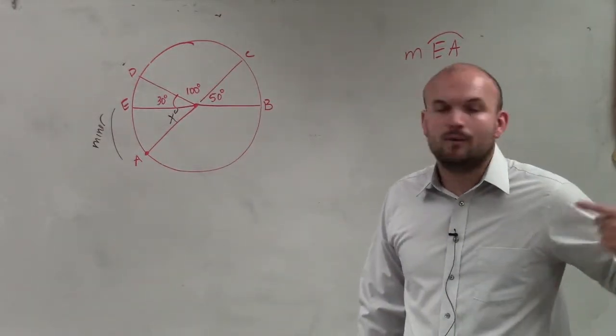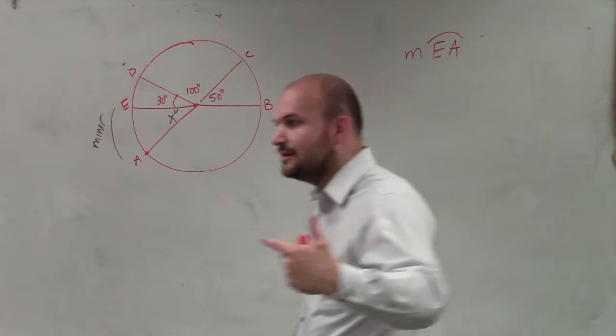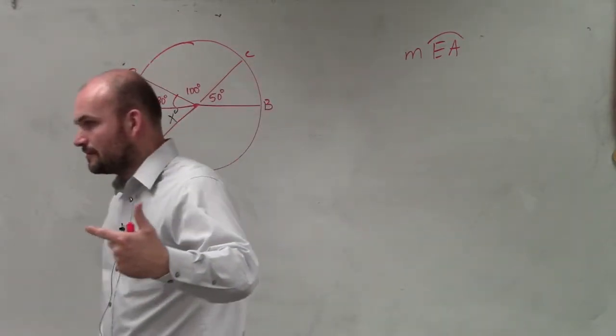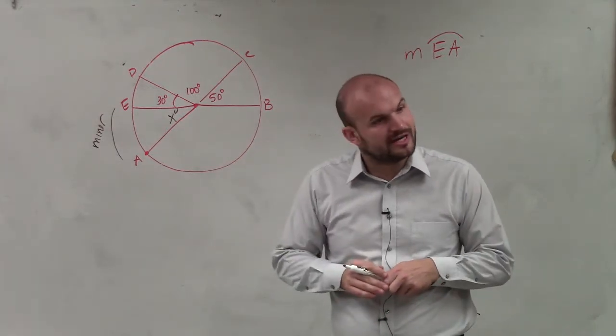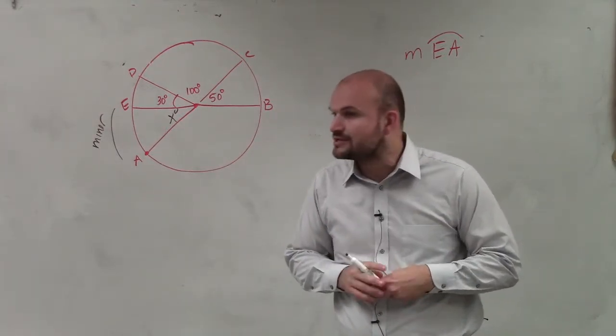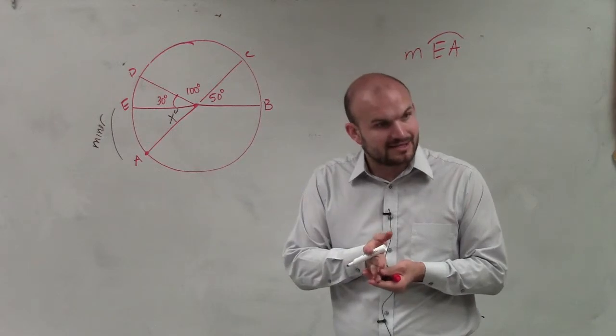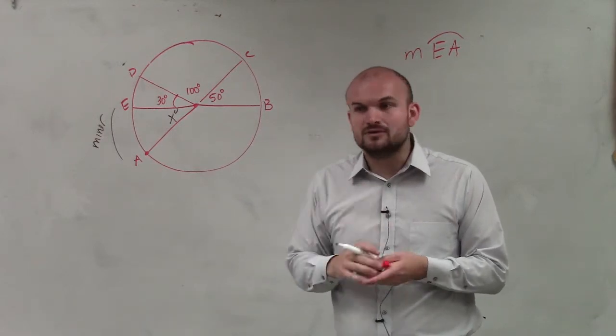So now we need to think about what mathematical processes can we use to be able to figure this out? Well, hopefully, in the beginning of the year, you guys remember we talked about vertical angles. When you have intersecting lines, opposite angles are congruent.